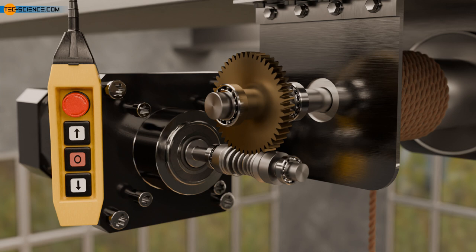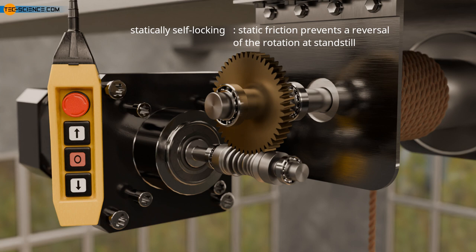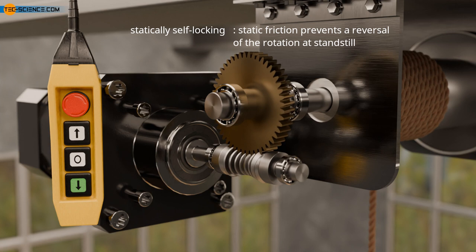As the examples show, there are two types of self-locking. On the one hand, there is self-locking in the rest position, which is referred to as statically self-locking. The point here is that the static friction acting on the flanks is not overcome and the worm gear does not reverse the direction of rotation on its own.